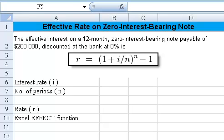Let's take a look at this quick effective rate on zero interest bearing note problem. The effective interest rate on a 12 year zero interest bearing note payable of $200,000 discounted at the bank is what?